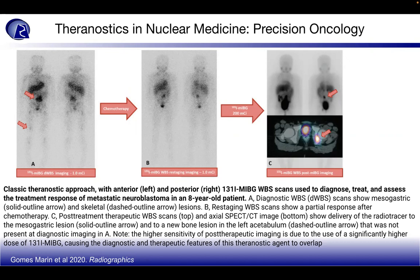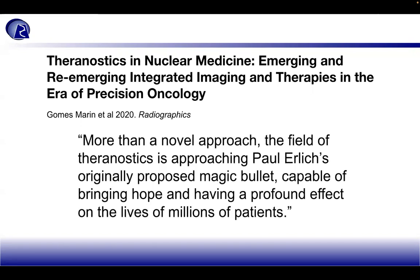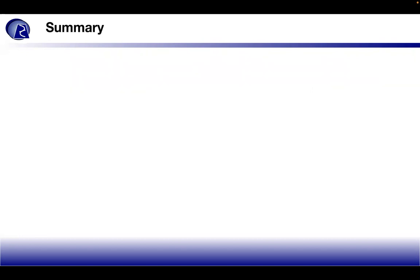This pediatric patient with metastatic neuroblastoma was treated with nuclear medicine theragnostics, from the paper 'Theragnostics and Nuclear Medicine: Emerging and Re-emerging Integrated Imaging and Therapies in the Era of Precision Oncology' by Gomes-Marin et al., published in RadioGraphics in 2020. As stated: 'more than a novel approach, the field of theragnostics is approaching Paul Ehrlich's original proposed magic bullet capable of bridging hope and having a profound effect on the lives of millions of patients.'